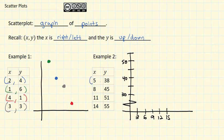So now when I graph the first point, 5 comma 38, there's going to be a little bit of estimating. Because 5 is going to be somewhere between 3 and 6, but closer to the 6. And 38 is going to be close to the 40, but maybe not quite there.